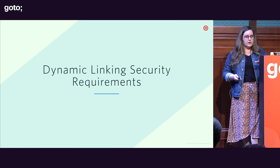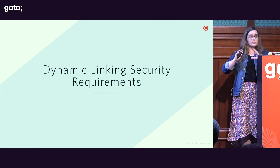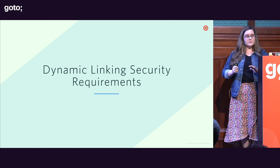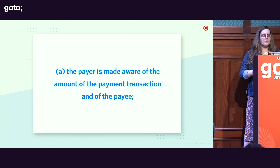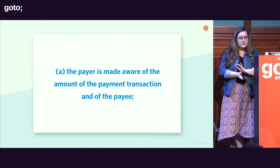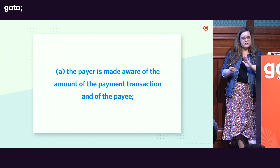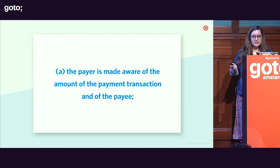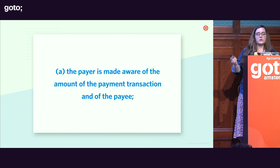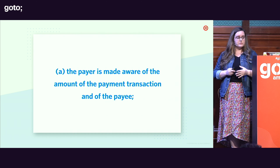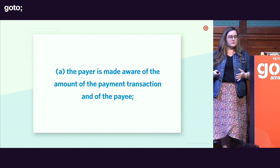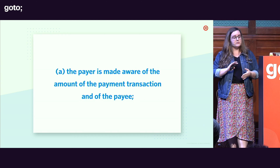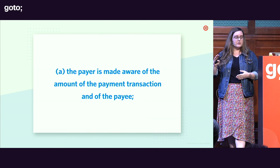There are also security requirements beyond what information to include in the message. The first requirement is that the payer is made aware of the amount and the payee — the value of the transaction and the identity of the recipient must be displayed. For example, if you're sending 45 euros to Bob Smith, or buying 80 euros worth of shoes from amazon.com, this information needs to be visible to the person making the transaction.